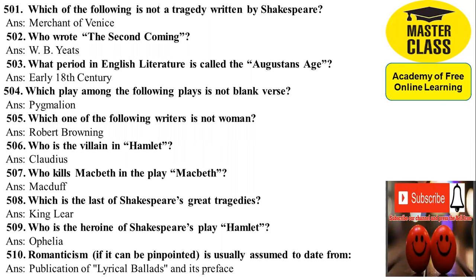MCQ 501: Which of the following is not a tragedy written by Shakespeare? Answer is Merchant of Venice. The other options were Hamlet, Othello, and King Lear, which are all tragedies. Question 502: Who wrote 'The Second Coming'? Answer is William Butler Yeats. 503: What period in English literature is called the Augustan Age? Answer is early 18th century.